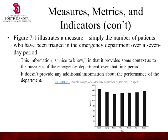Many of the top medical centers in the nation are able to place a stent within 30 minutes. This graph illustrates a measure — a sample of the number of patients triaged. It shows how many were triaged per day, which provides context about the busyness of the emergency department over a time period, but it doesn't provide additional information about the performance of the department.